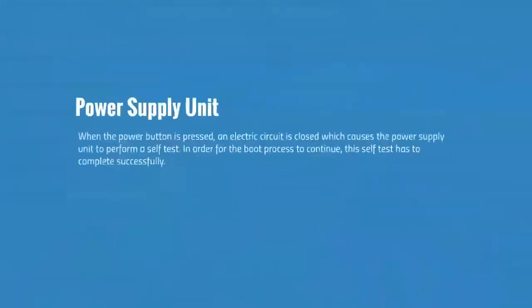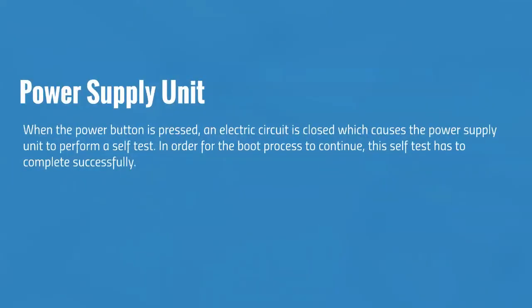We will start with the power supply unit. When the power button is pressed, an electric circuit is closed which causes the power supply unit to perform a self-test. In order for the boot process to continue, this self-test has to complete successfully. If the power supply unit cannot confirm the self-test, there will usually be no output at all.